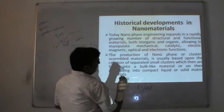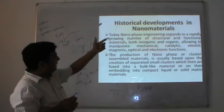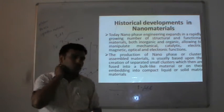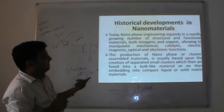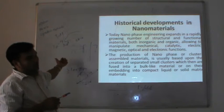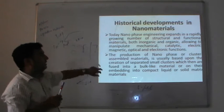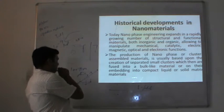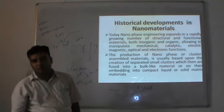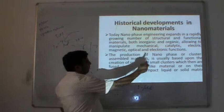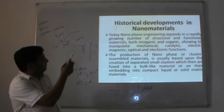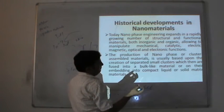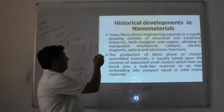By using nanostructures, we can increase the catalytic property of a material. As discussed, even materials that are insulators at the microscale can be conducting at the nanoscale. The magnetic properties are easily modifiable by reducing the size of the material, as well as optical and electronic functions. Carbon nanotubes, single-electron transistors, and other nanostructures are very important in the electronic industry. The production of nanomaterials or cluster-assembled material is usually based on the creation of separated small crystals.